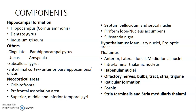Other components of the limbic system include the cingulate gyrus, the uncus, the amygdala, the parahippocampal gyrus, the subcallosal gyrus, the entorhinal cortex — which includes the anterior part of the parahippocampus and the uncus — and neocortical areas like the orbitofrontal cortex, prefrontal association areas, superior, middle, and inferior temporal gyri. We also have the septum pellucidum, the septal nuclei, the piriform lobe with the nucleus accumbens, and the substantia nigra.